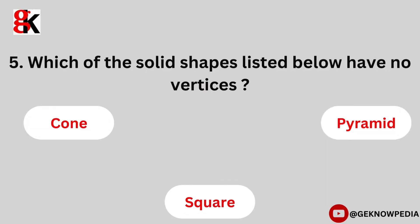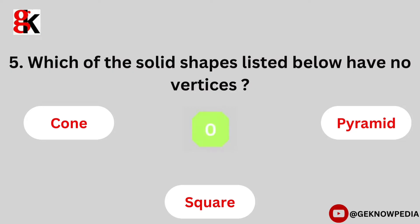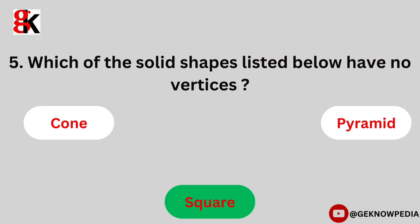Fifth question. Which of the solid shapes listed below have no vertices? Cone, pyramid, square. The correct answer is square.